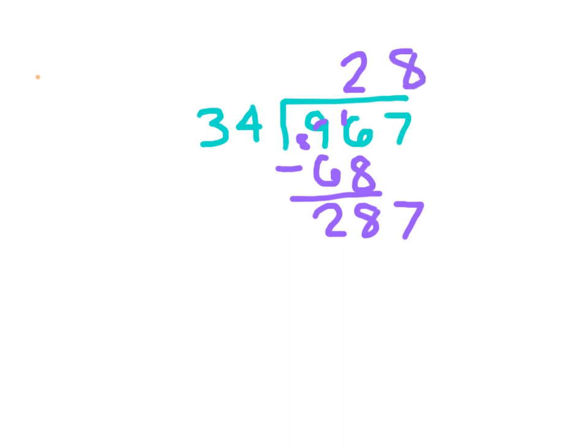8 times 4 is 32, regroup the 3. 8 times 3 is 24, plus 3 is 27. If I subtract those two, I get 15. 15 is fine, because 15 is not bigger than 34. So I chose the right number for my quotient. My remainder is 15.